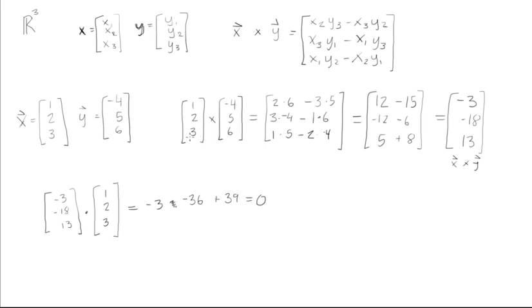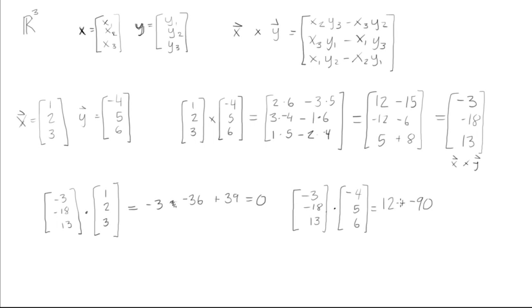And we'll check that x cross y is also orthogonal to vector y. We take the dot product of (-3, -18, 13) with vector y = (-4, 5, 6): (-3)(-4) + (-18)(5) + (13)(6) = 12 - 90 + 78 = 0. So x cross y is orthogonal to both vector x and vector y.